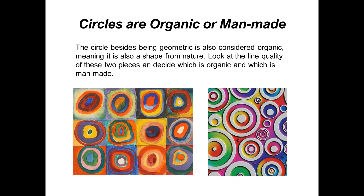There is one shape of the four we discussed that is considered both organic and man-made, and that is the circle. Look at the line quality of these two pieces and decide which one you feel is organic and which one you feel is man-made. Remember, line quality is how you assess how something was created.